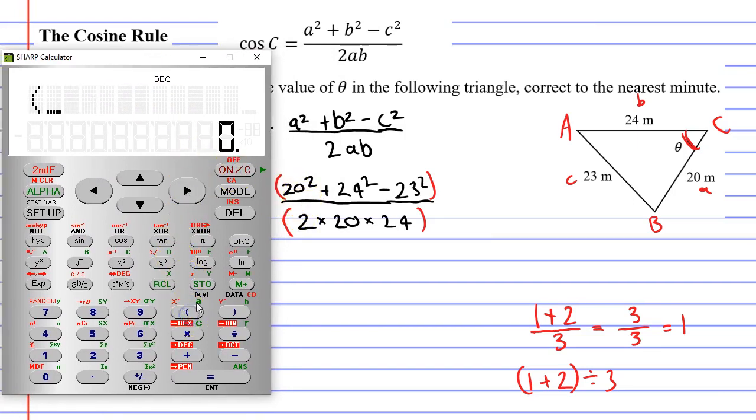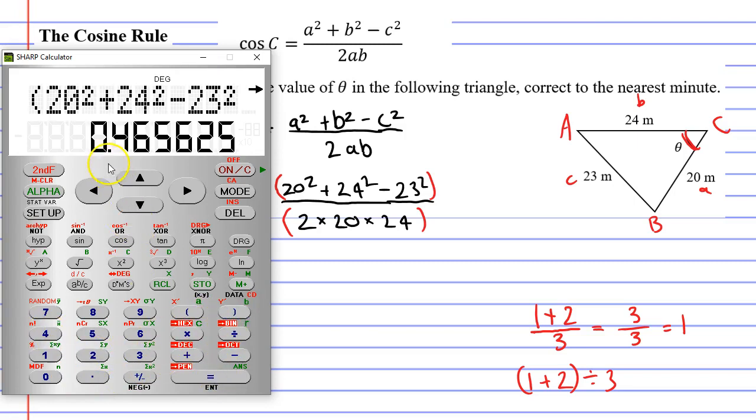And we're going to go open bracket. 20 squared plus 24 squared minus 23 squared. Close the brackets. Now, I'm just going to treat this like division. You can do it like a fraction, but I prefer to treat things as division. Divide bracket 2 times 20 times 24. Close our brackets. Equals. And here's our solution. 0.465625.